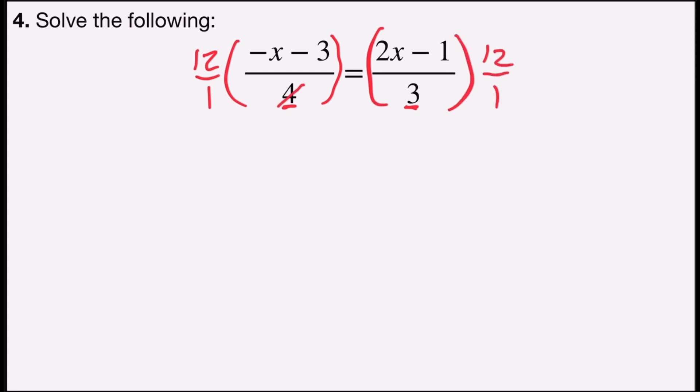So 4 will divide into 12 3 times, and I'm going to have 3 times the numerator, which is the distributive property. 3 times negative x is negative 3x. 3 times negative 3 is negative 9. And so I've cleared the fraction on the left side.